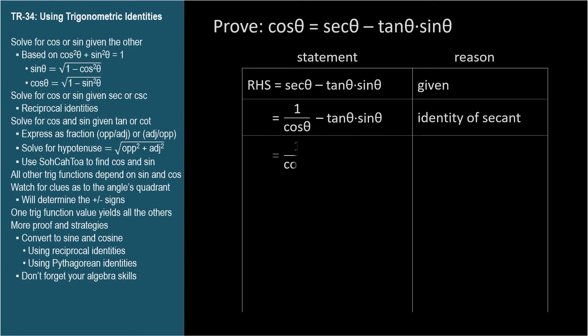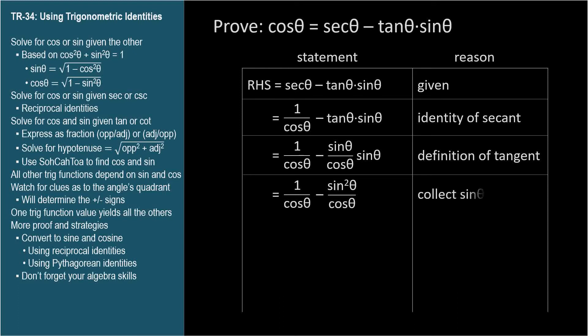Now let's get rid of the tangent by replacing it with sine over cosine. The reason can be definition of tangent, or even tangent equals sine over cosine. So in the second term, we have sine theta over cosine theta times sine theta. This is the same as sine squared theta over cosine. So we'll write that, stating that we're collecting terms.